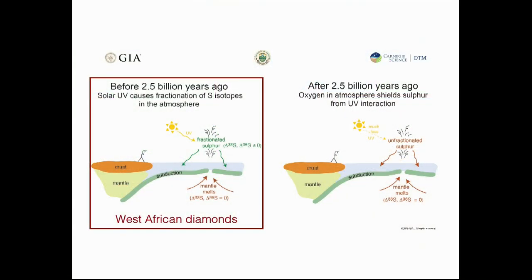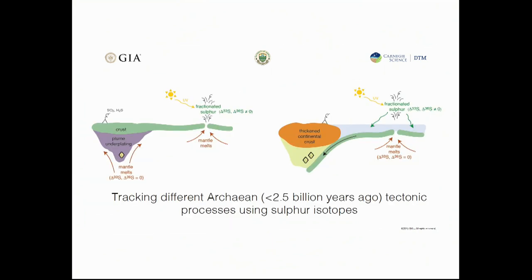They show us that the sulfur incorporated into these inclusions was at one point atmospheric sulfur that was then incorporated as sediment on the ocean floor and subducted into the continental keel. This becomes a very important tracer for Archean tectonic processes — we can use sulfur isotopes to look for differences in how different cratonic keels were stabilized, either through deep mantle melting or by tracking subduction.